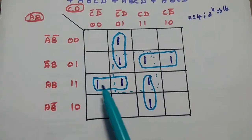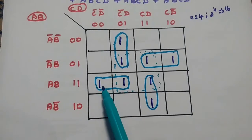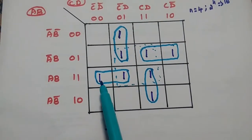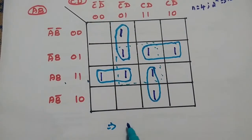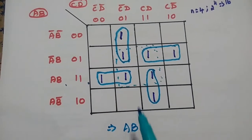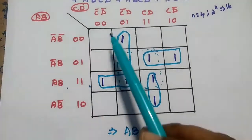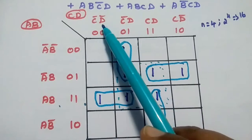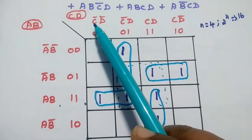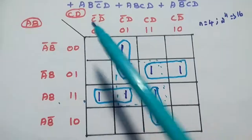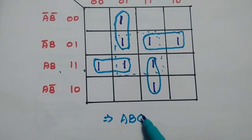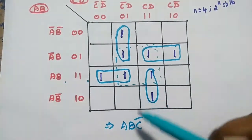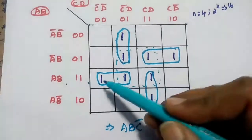After grouping the 1s, we write the simplified form. For the first group, the common row value is AB. For the two columns, C̄ is common (D̄ and D cancel), so we write C̄. This group is represented as ABC̄.